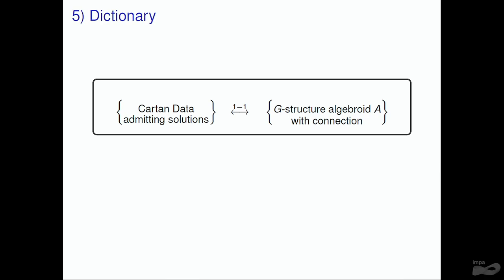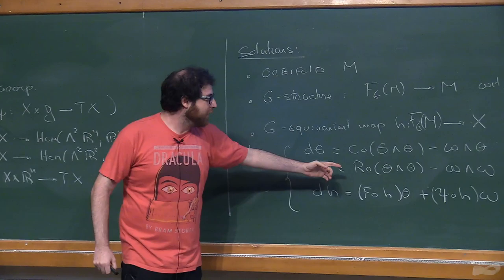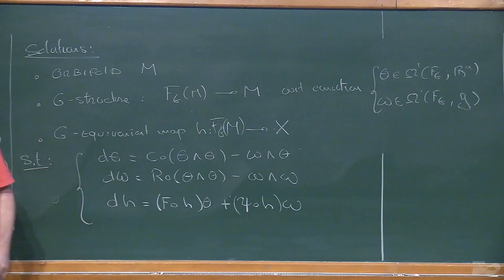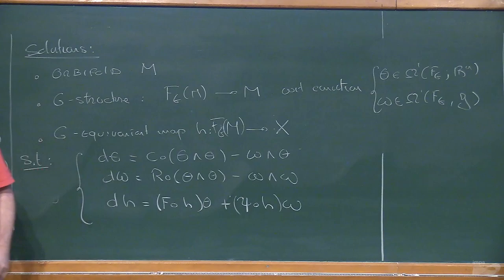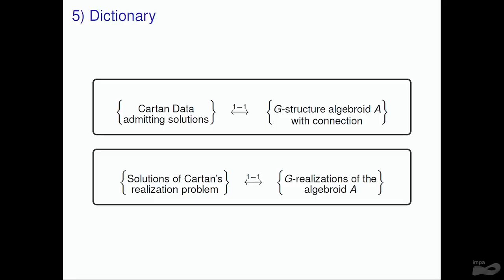As Rui was telling us, Cartan data admitting solutions give rise to G-structure algebraids. He wrote it explicitly. So there was the Cartan data, and then you could define out of these structures the bracket, which uses the torsion and the curvature, and the anchor, which uses the map F given in the Cartan data. Or you can view this dually on the differentials of forms. This was something that Rui explained quite a lot.